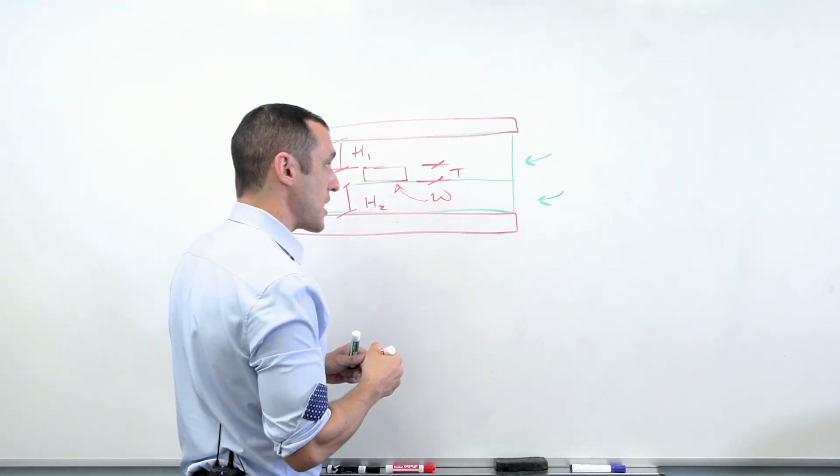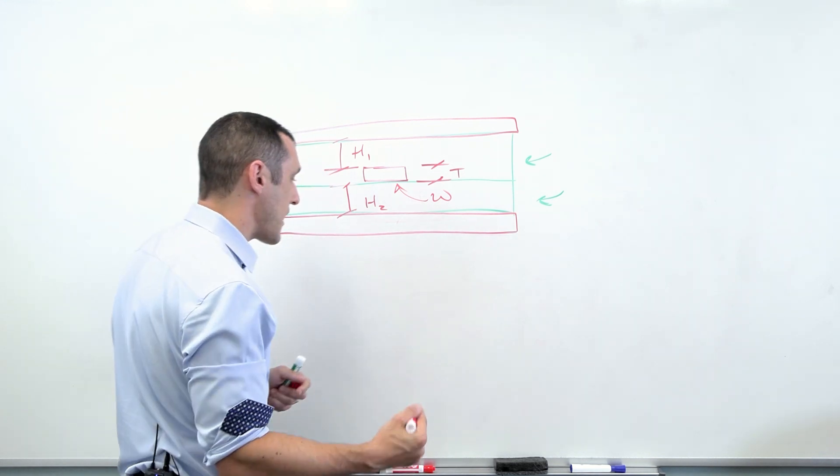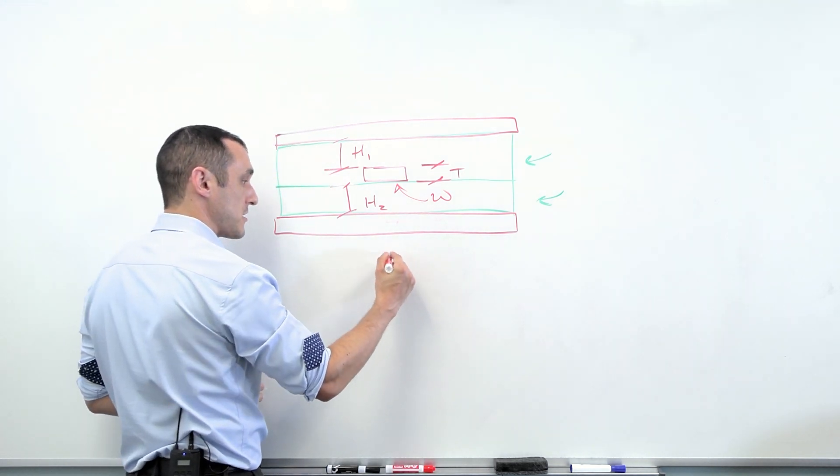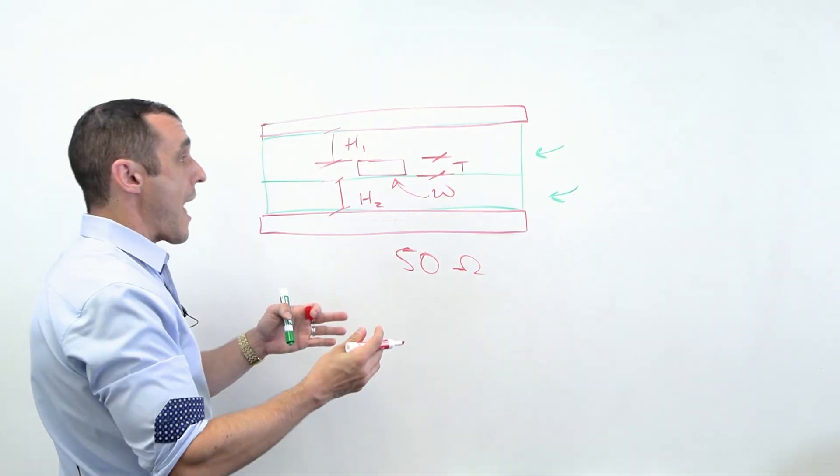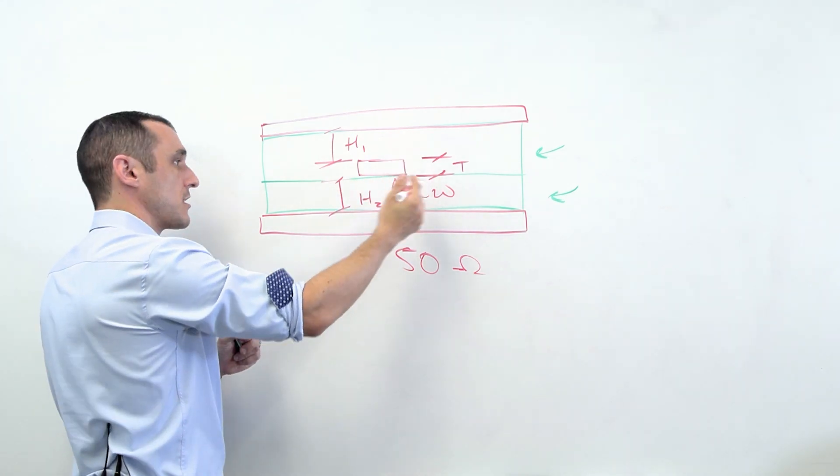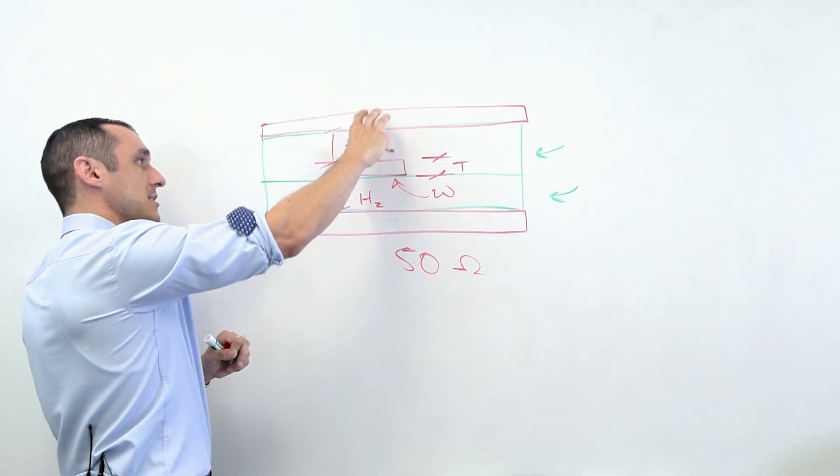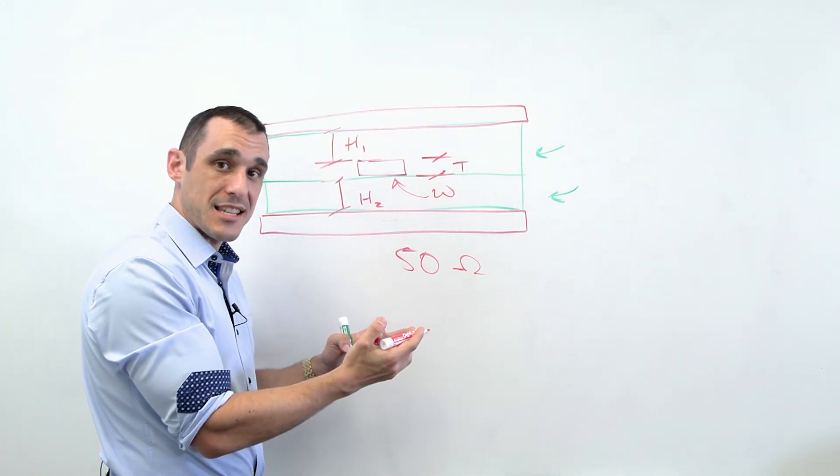And the way we can reduce the skin effect losses in this case is again, to adjust the size of the trace. Also in this case, when we're routing at frequencies or at speeds, where we need to start worrying about the skin effect, we're going to have some impedance target. So could be 50 ohms, could be something else. As we start to adjust the geometry of this trace, whether it's the thickness or the width or the distance to one of these two planes, we're going to want to make sure that we continue to hit this impedance target.